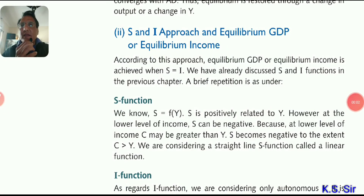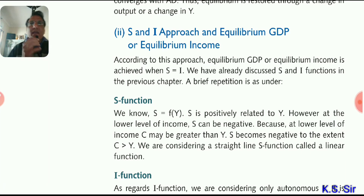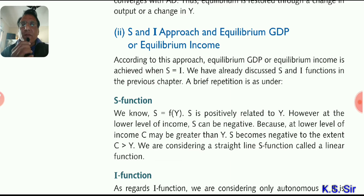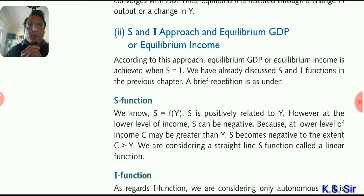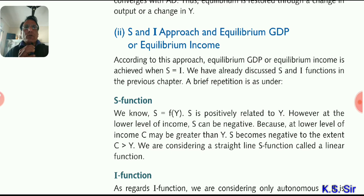Welcome again students to my YouTube channel. Hope you are excited about the second part of this chapter. We are studying short run equilibrium output GDP. In the first part we studied aggregate demand and aggregate supply theory and its equilibrium. There are two approaches of this equilibrium: AD=AS approach and S=I approach. This second part covers the saving and investment approach, which is an alternative approach of this equilibrium.